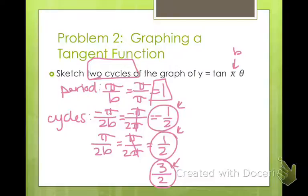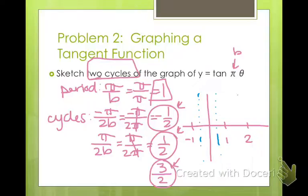So when we go ahead and put these on the graph, we're going to have negative 1, 1, 2. So our asymptotes are going to be at negative 1 half, positive 1 half, and 3 halves. Those ones got kind of crazy down there. So there's our asymptotes.